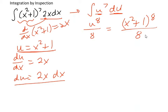And of course, if you ever want to check your answer, you just have to take the derivative of the result you got. So if I want to check x squared plus 1 to the 8th over 8, I just take its derivative. So the derivative of x squared plus 1 to the 8th over 8.